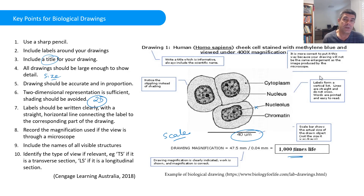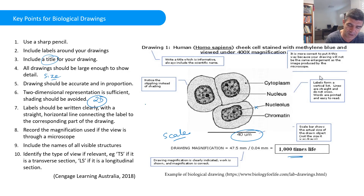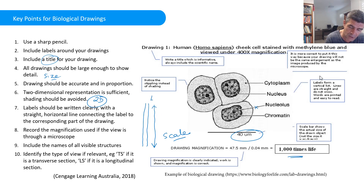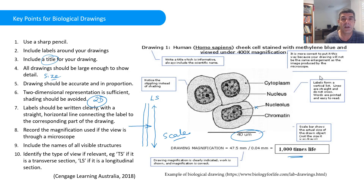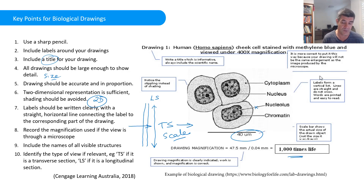You will include any structures that you can see and identify — some may be too small so you don't have to include those. If you think about a plant with a stem, you can take a scalpel and cut it lengthways — that would be a longitudinal section, cutting down the long part of the stem. You could also take a slice across the stem — that would be a transverse section. The transverse section goes across and the longitudinal section goes down, and you will see different things depending on which you use.